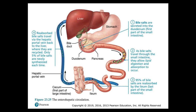Figure 23.25 illustrates enterohepatic circulation. Step 1: bile salts are secreted into the duodenum. Step 2: as bile salts travel through the small intestine, they facilitate lipid digestion and absorption. Step 3: 95% of the bile salts are reabsorbed by the ileum. Step 4: reabsorbed bile salts travel via the hepatic portal vein back to the liver to be recycled, with only 5% newly synthesized each time.